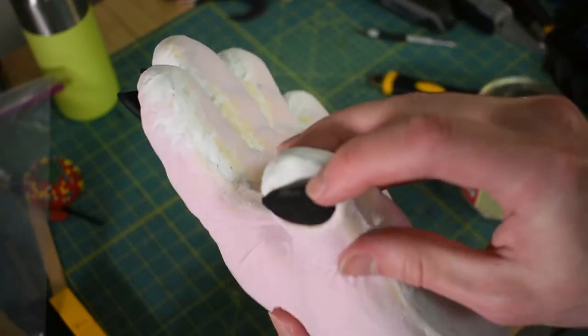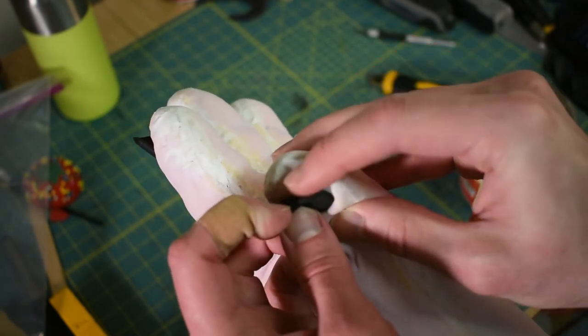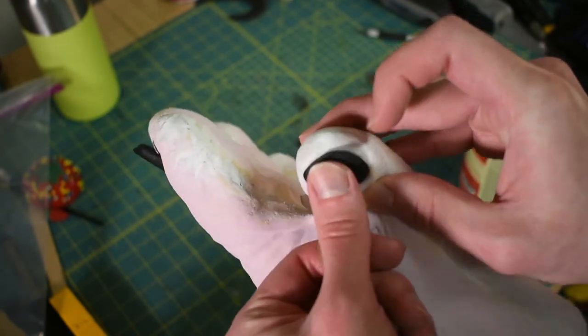And then if it needs a little bit more glue, like it's sticking up a bit on this side, I'll put some more glue down. I'll just lift the nail up, put some glue down, and then wait for it to dry and stick it back down.